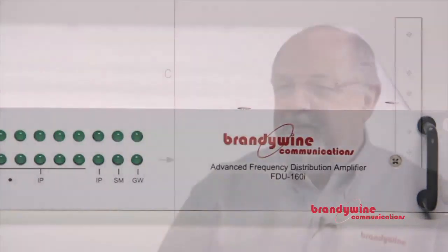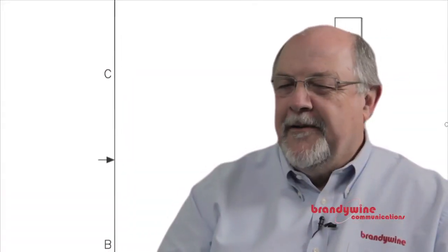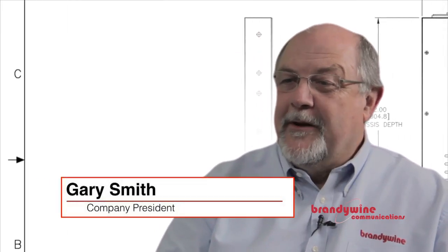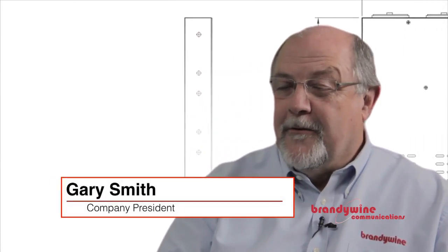Distribution amplifiers typically just sat in a rack, operated until they broke, and then somebody would have to run around to find out what had gone wrong.